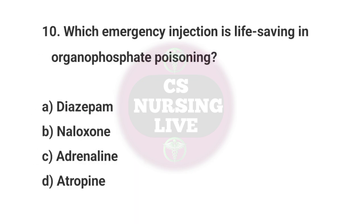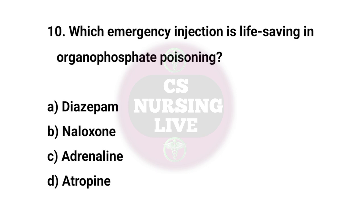Question No. 10. Which emergency injection is life-saving in organophosphate poisoning? Right answer is D. Atropine.